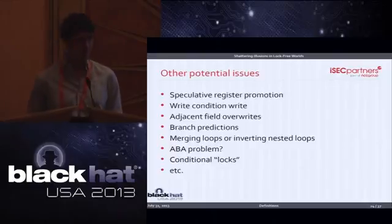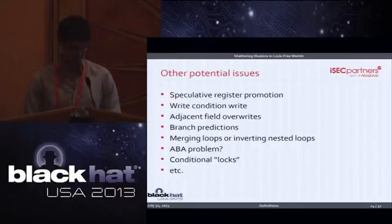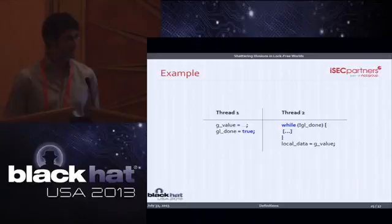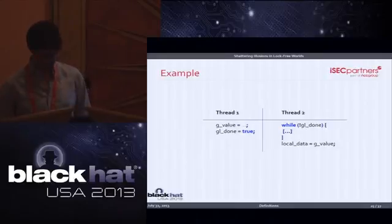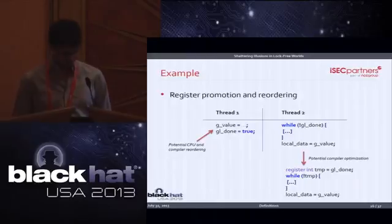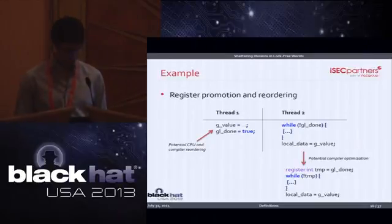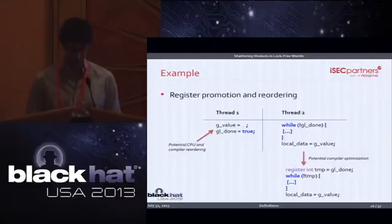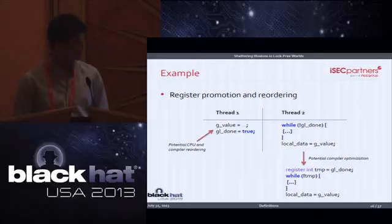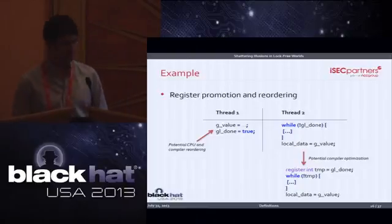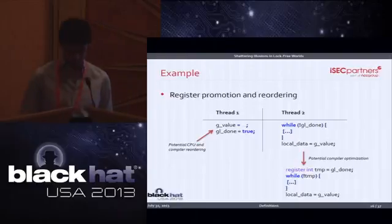Now I'm going to talk about some optimizations the compiler can do that can create issues in lock-free code. In the first thread you could get a potential compiler and CPU reordering. In the second thread, the compiler is likely to do a register promotion — meaning it is likely to load the global 'done' into a register, which is a completely valid optimization but won't work in a multi-threaded environment. This is a relatively obvious optimization and a developer would see the problem pretty quickly.